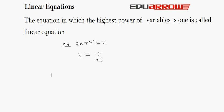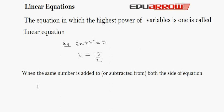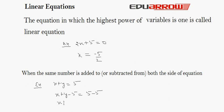The solution of linear equations is not affected when the same number is added or subtracted from both sides of the equation. For example, we have x plus y is equal to 5. If we subtract 5 from both sides, then we have x plus y minus 5 is equal to 5 minus 5, that is x plus y minus 5 is equal to 0.